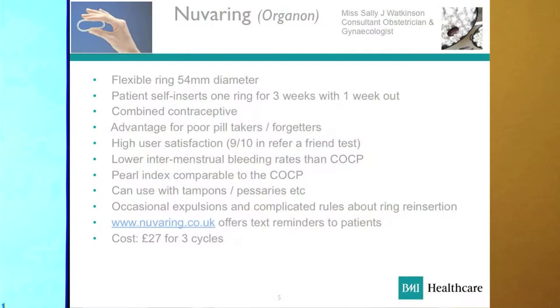NuvaRing has a similar Pearl index, so it's fairly comparative. You can use it with tampons, though realistically the ring is out during your period week. It's also compatible with pessaries for thrush treatment and condoms for STI prevention. There are occasional expulsions, and like Mirena there are fairly complicated rules if it falls out. NuvaRing also offers a text reminder service for patients — particularly relevant for this group who forget their pills. It's about £27 for three cycles, comparable to some other preparations.